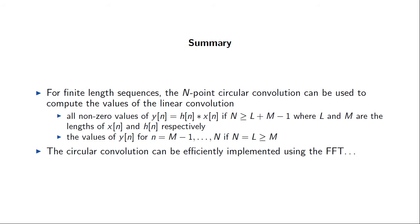To summarize: we can use the circular convolution to compute the values of the linear convolution provided that the length of the circular convolution is sufficiently large. Since the circular convolution corresponds to multiplication of DFTs and we have a very fast algorithm for computing the DFT — namely the FFT algorithm — we'll be able to use the FFT to compute circular convolutions in a very computationally efficient way. We can then use that result to recover the values of the linear convolution, i.e., the output of our filter, using the FFT algorithm as the main computational tool.